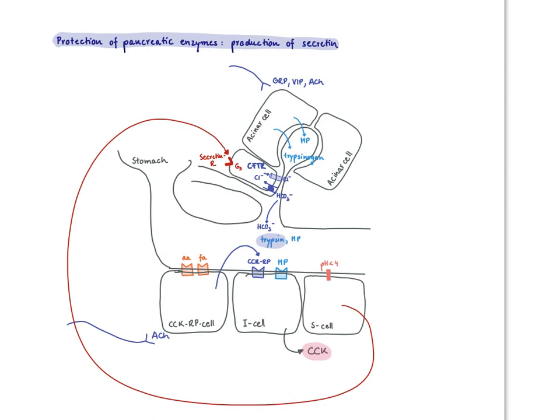This ductile bicarbonate neutralizes the acid secreted by the stomach as part of a negative feedback loop for duodenal pH. This concludes the video on the regulation and production of CCK and also of secretin.